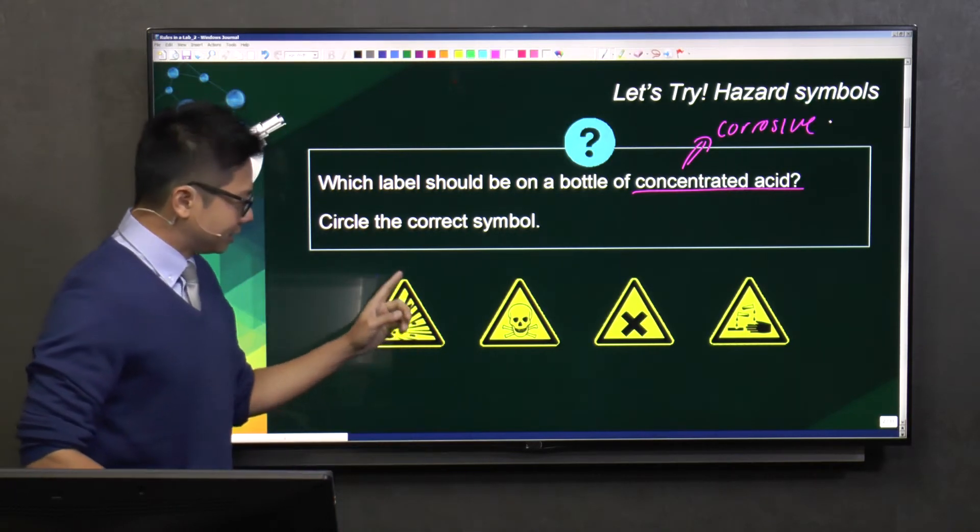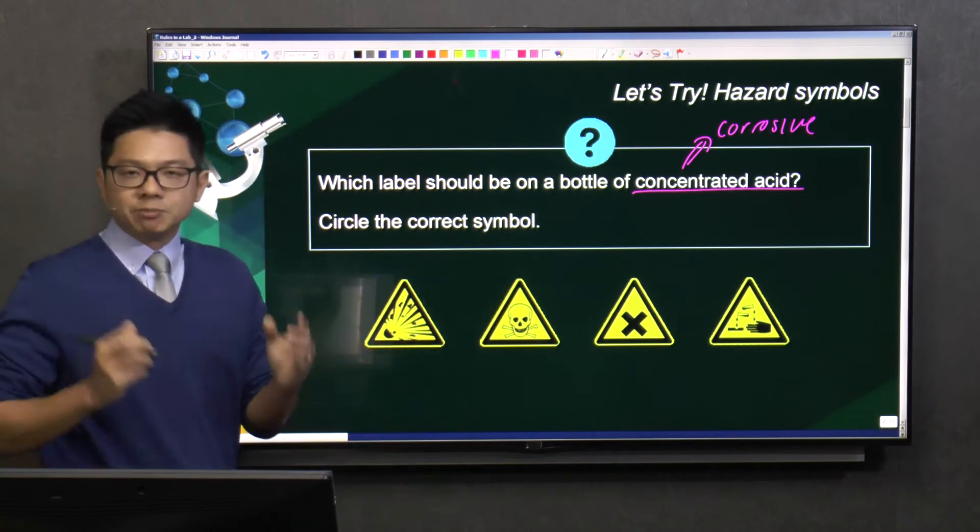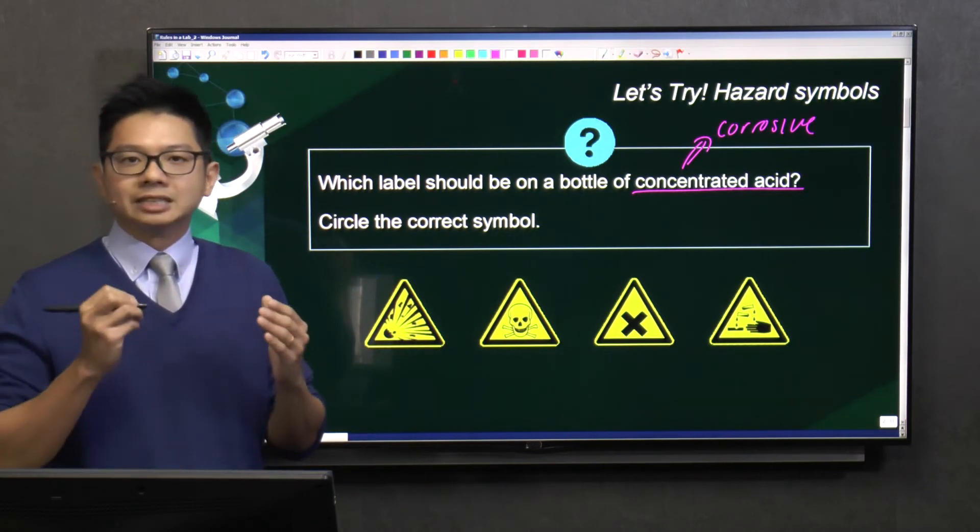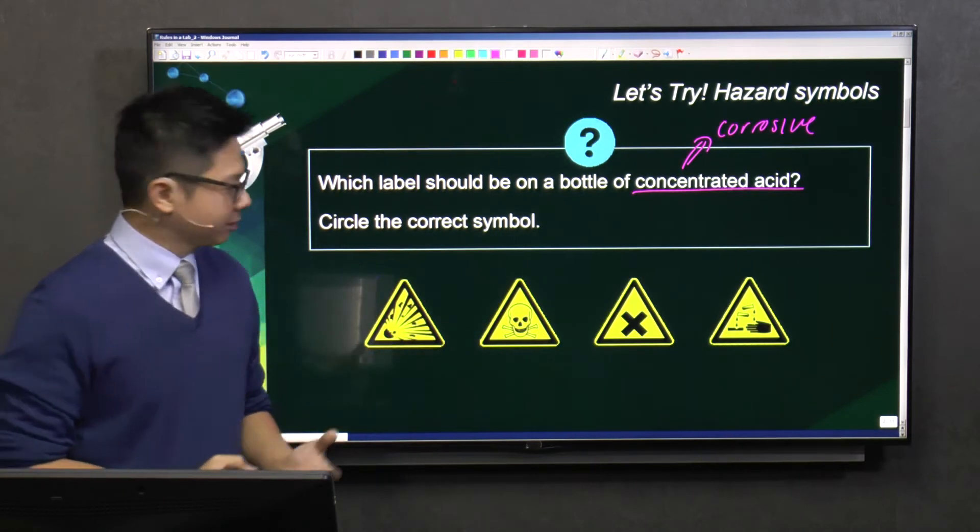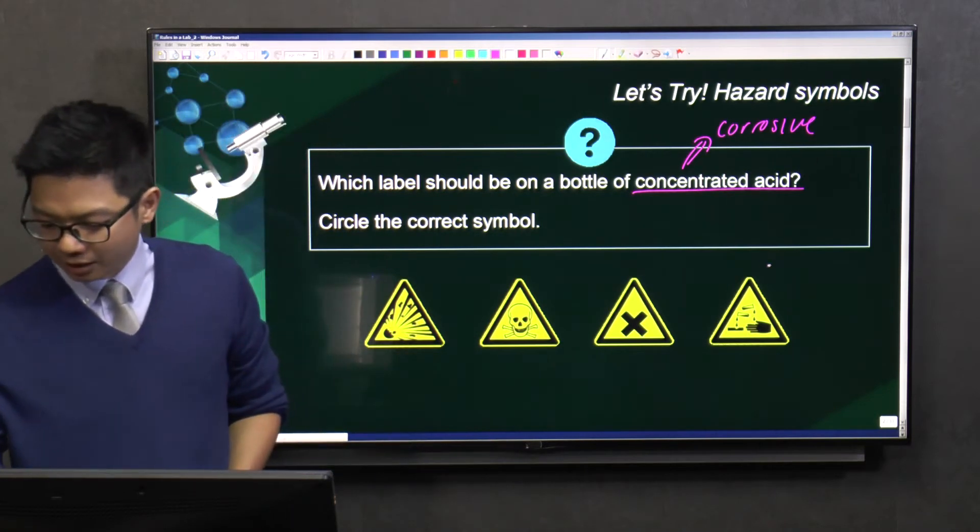So looking at these four symbols, which symbol tells you that the substance is corrosive? I think it's pretty straightforward. It should be the last one.